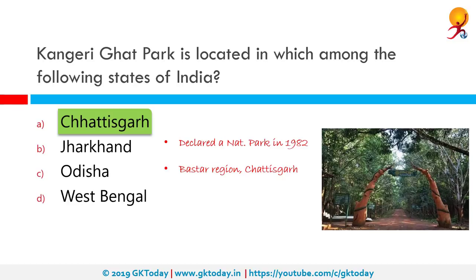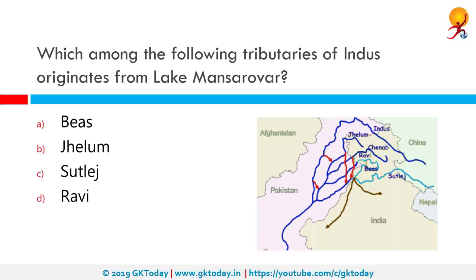Which among the following tributaries of the Indus originates from Lake Mansarovar? The correct answer is Sutlej. The Sutlej River is the longest among the five rivers that flow in the historic crossroads region of Punjab in North India and Pakistan. These five rivers are Jhelum, Chenab, Ravi, Beas and Sutlej — all tributaries of the main river Indus. Sutlej is also known as Shatadru and is addressed as Shatarudra by the Gorkhalis. It is the easternmost tributary of the Indus River.